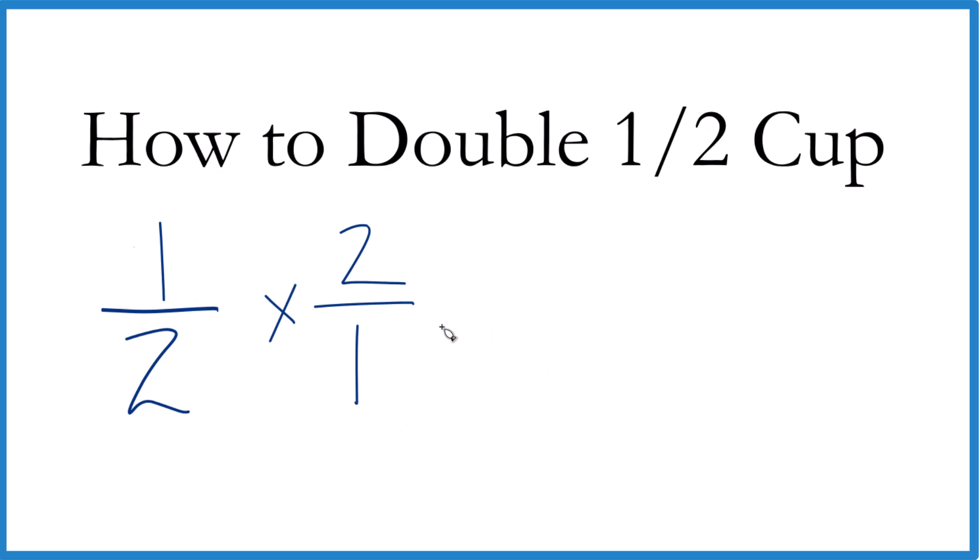One times two, that equals two, and two times one is two. So you get two over two, and two divided by two, that's just one. So one half of a cup doubled is just one cup. So not too bad.